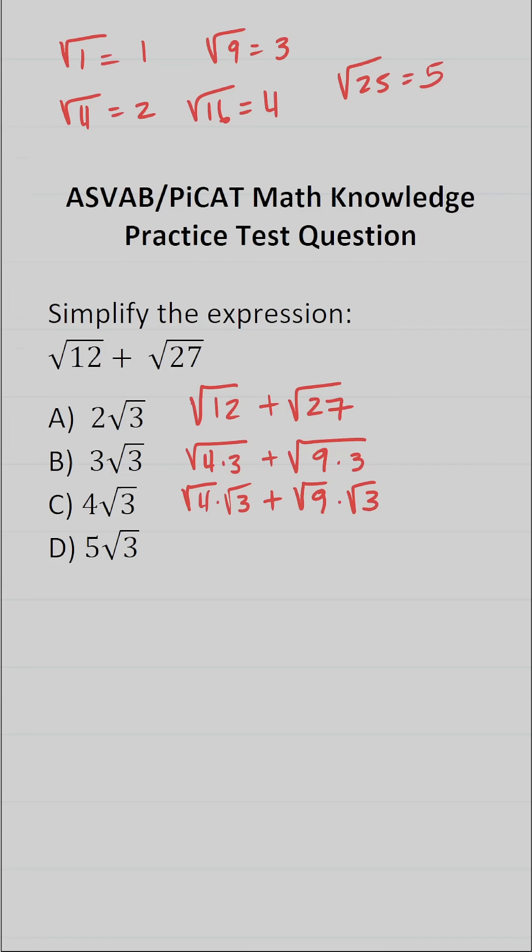Well what is the square root of 4? It's 2. So this becomes 2 square root 3 plus what is the square root of 9? It's 3. This is 3 times the square root of 3 which is 3 square root 3.